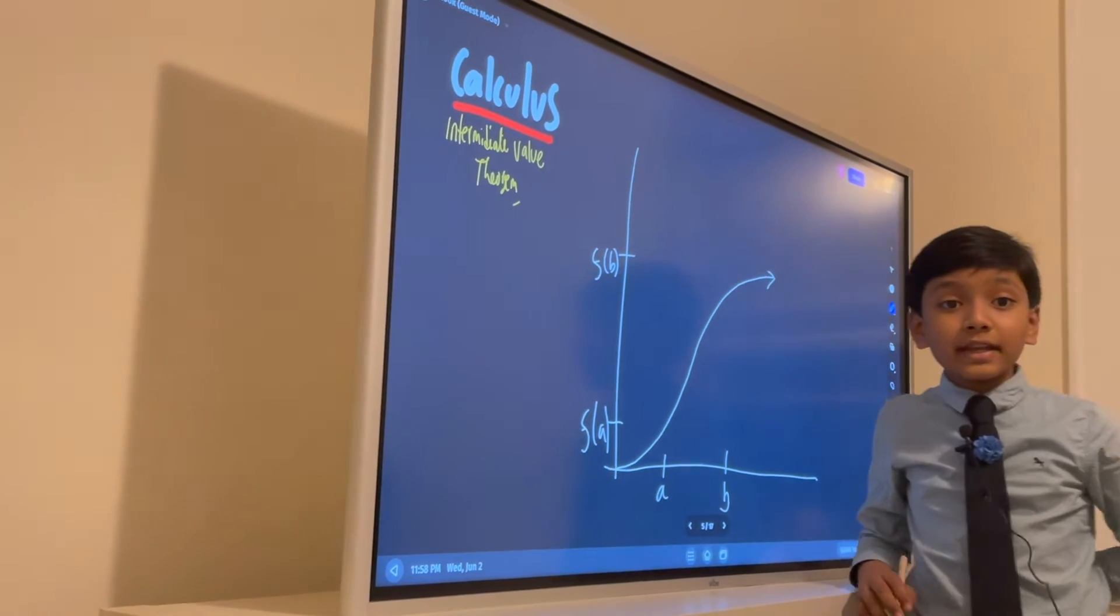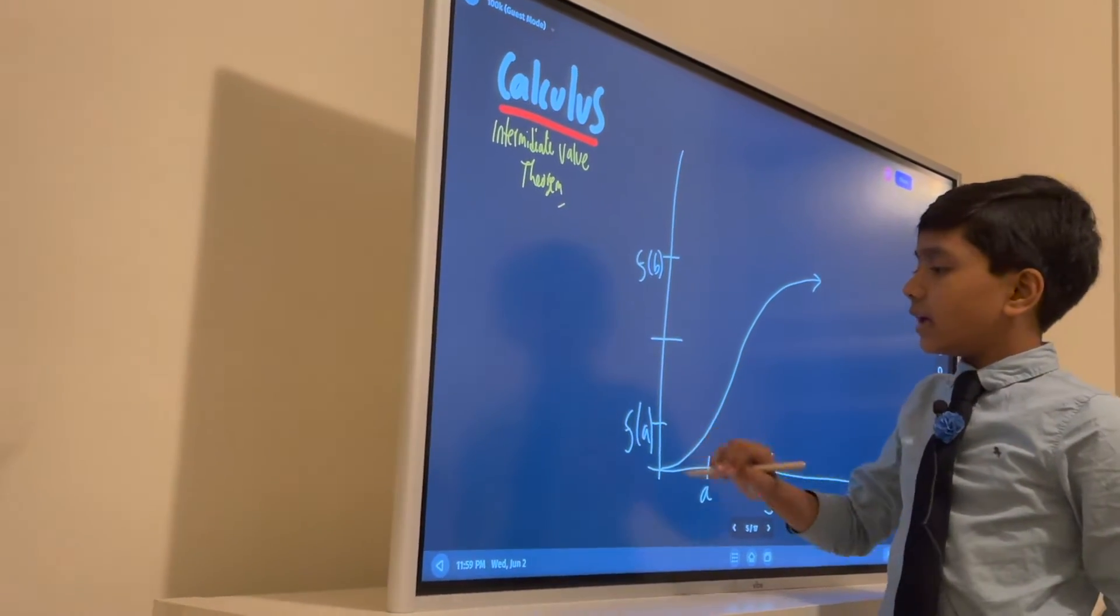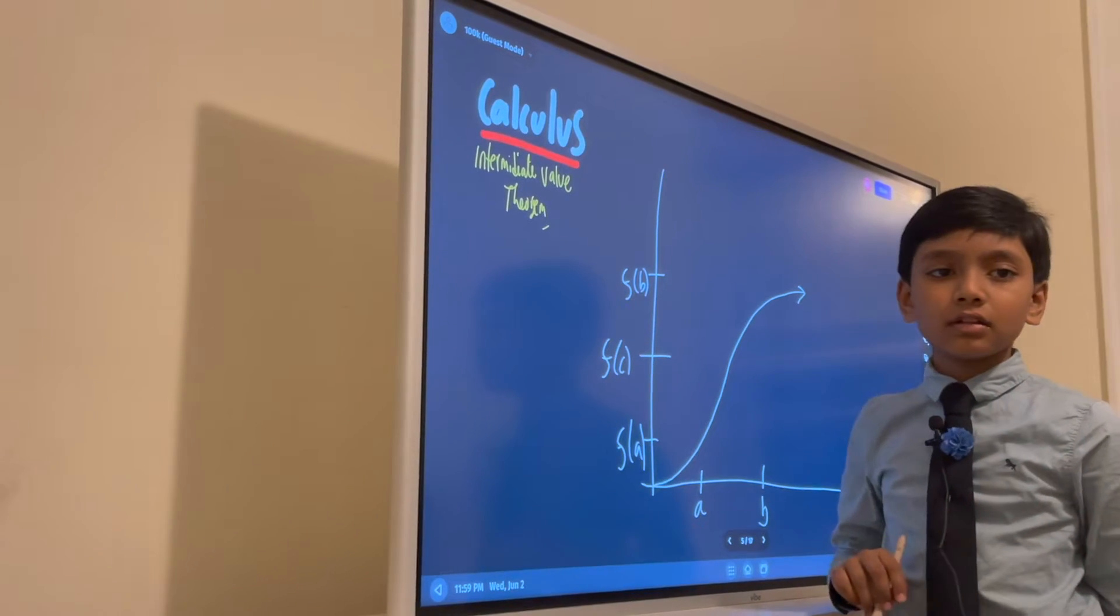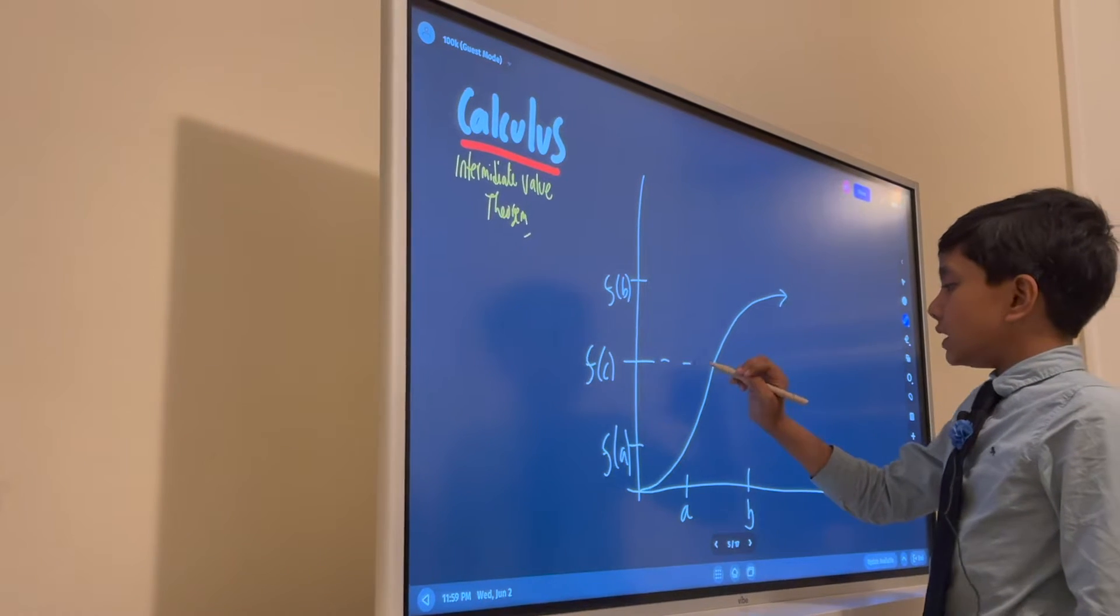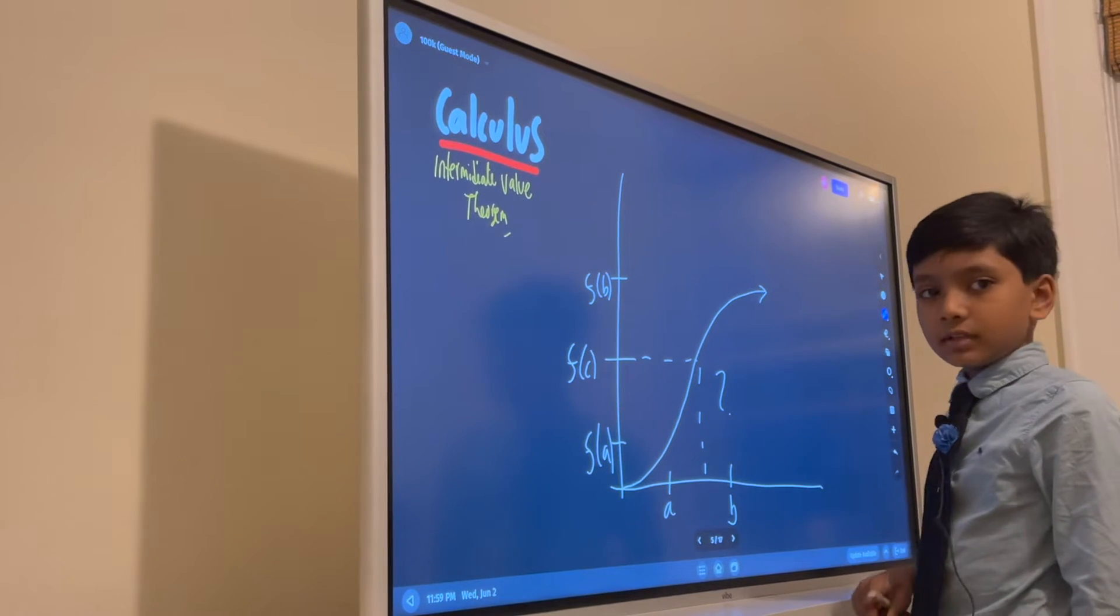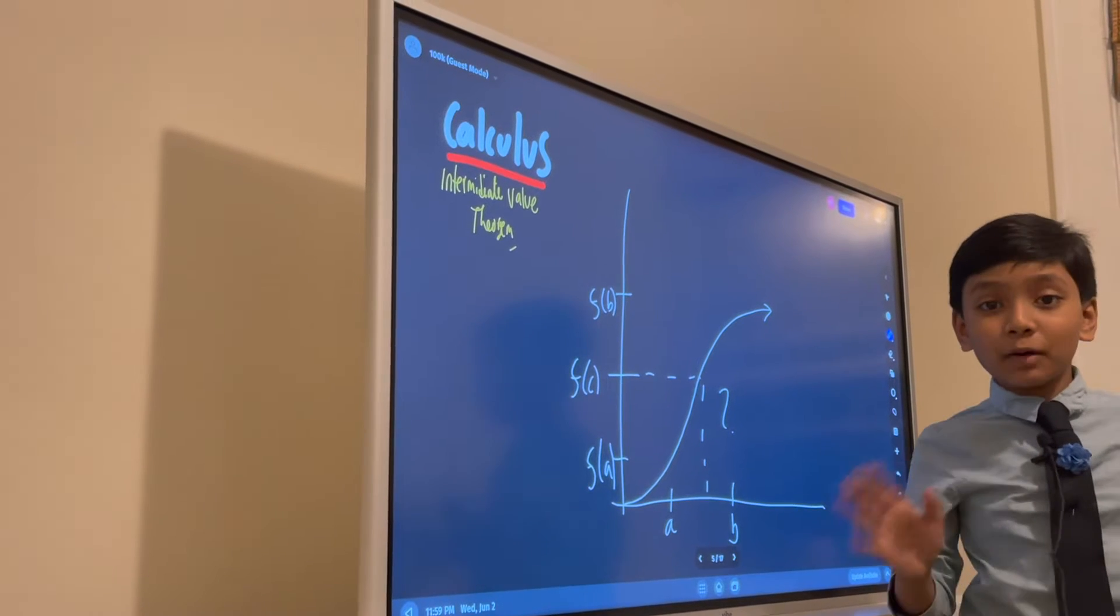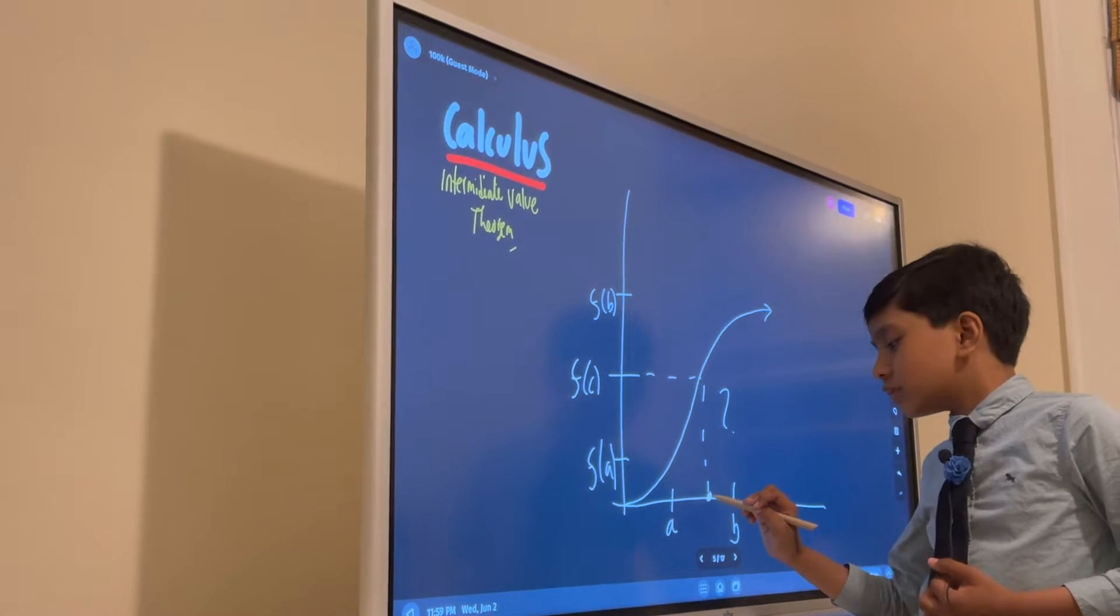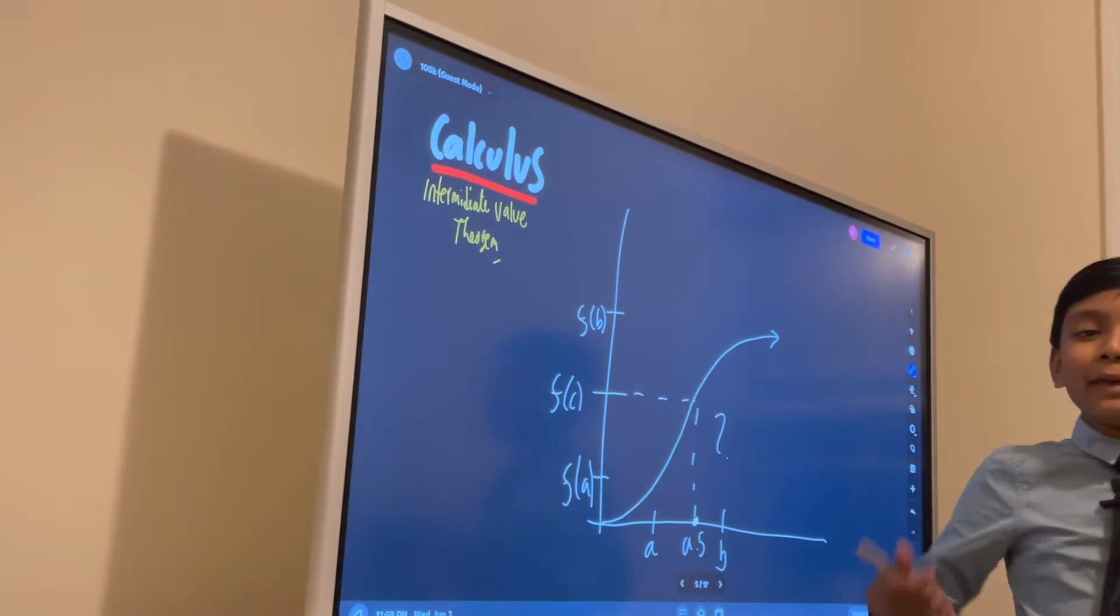The intermediate value theorem states that if f of c exists somewhere over here in the middle, then there must be a number called c somewhere in here. It could be anywhere. I'm not sure where it is, but it has to be somewhere. In this case it would be right over here, which is about the middle between a and b.